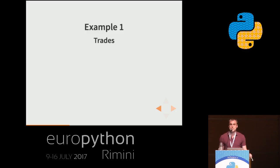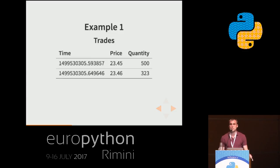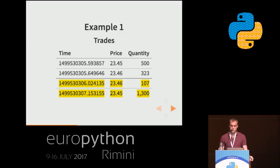I'll give you some specific examples of what kind of data or state we might be showing to users. The first example is trades — a record of transactions that happened on the stock exchange on a particular stock. It may look like a simple table where for each transaction we see the timestamp, the price, and how many shares exchanged hands. This is just an append-only log, so the stock exchange keeps sending us new trades as they happen, and it's not very difficult to display efficiently — we just send the new trades as they arrive.